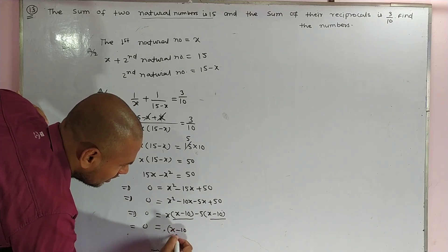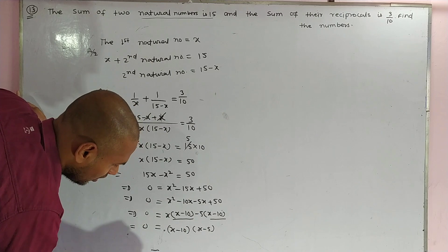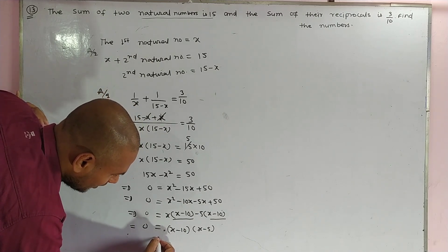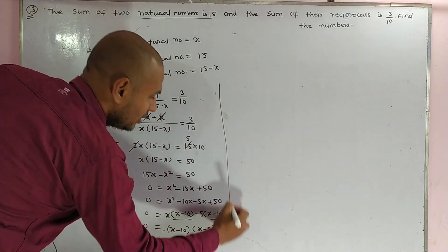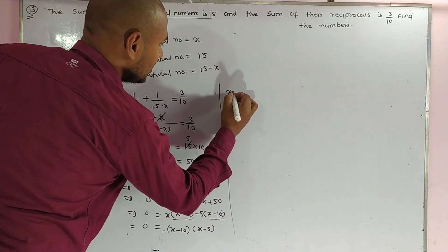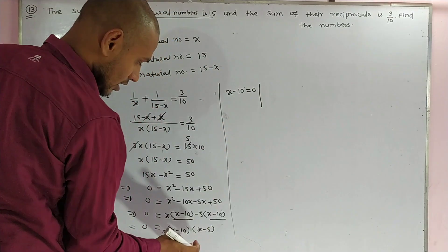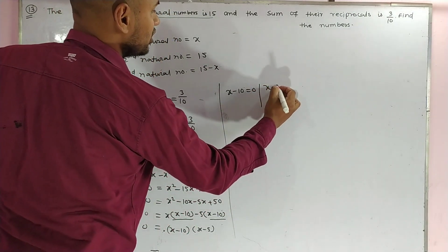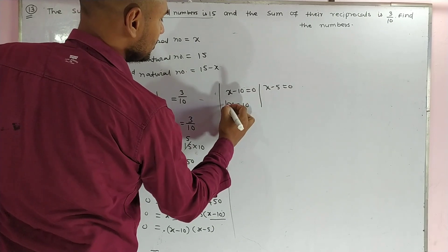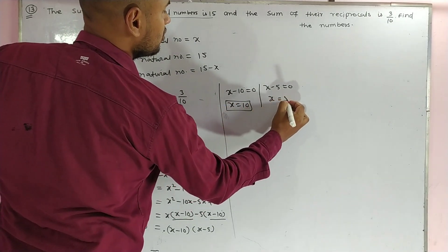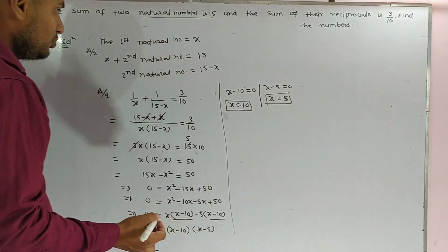Taking (x minus 10) common, we get (x minus 10)(x minus 5) equals 0. From here, x minus 10 equals 0 gives x equals 10, and x minus 5 equals 0 gives x equals 5. So there are two values of x: 10 and 5.